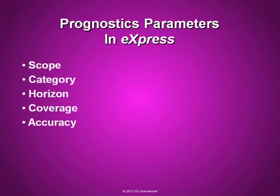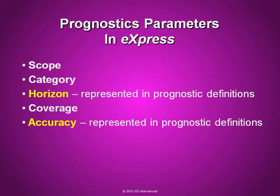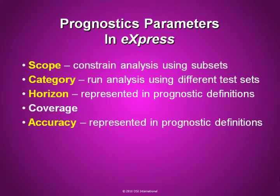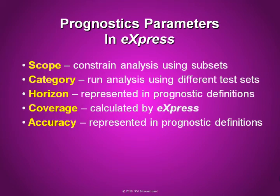Now for a few brief words on how these system prognostic requirements relate to definitions and analyses within EXPRESS. As explained in other videos in this series, the horizon and accuracy of each individual prognosis is represented in a prognostic definition — a variation of a test definition within EXPRESS. The category parameter is addressed by grouping prognostic definitions into test sets based on the prognostic category. Different scopes can be represented by creating subsets in EXPRESS to represent the sets of possible failures that apply to each scope. The fifth parameter, coverage — both the weighted and unweighted versions — is calculated by the EXPRESS software, as described in detail in another video in this series.